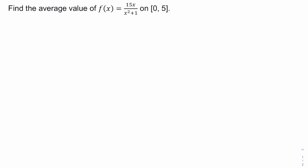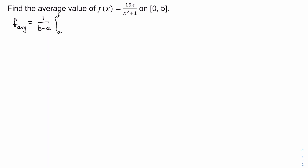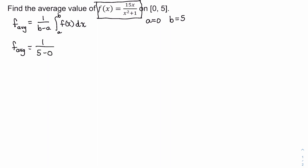To do this, we're finding the average value of our function, f_avg, which equals 1 over (b minus a) times the definite integral from a to b of f(x) dx. Here, a is the left endpoint and b is the right endpoint, so f_avg equals 1 over (5 minus 0) times the definite integral from 0 to 5 of 15x / (x² + 1) dx.